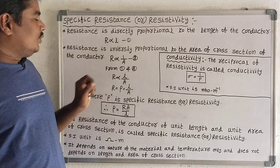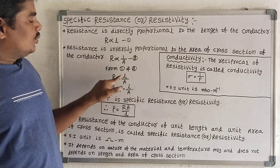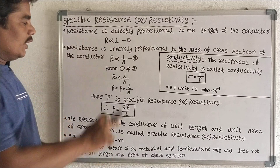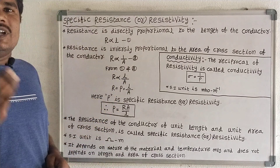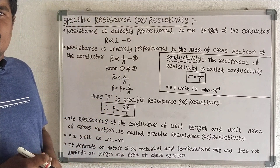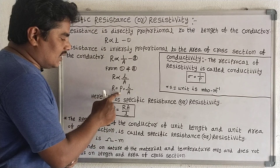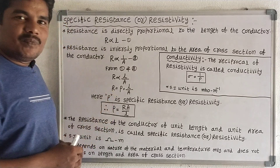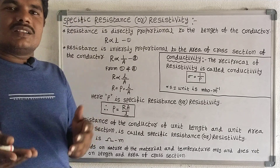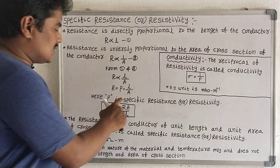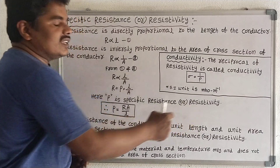From 1 and 2 we can write R is proportional to L by A. To replace this proportional symbol by is equal to, we have to write one constant. That constant is Rho. Rho is the proportionality constant, and it is also called specific resistance or resistivity.